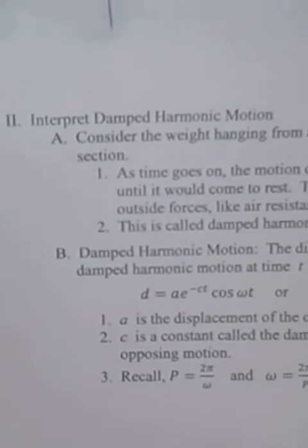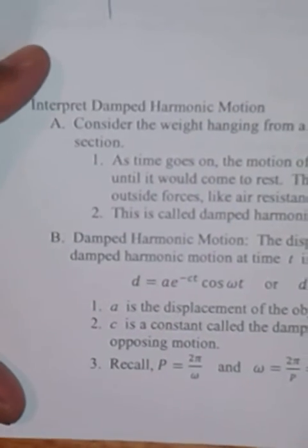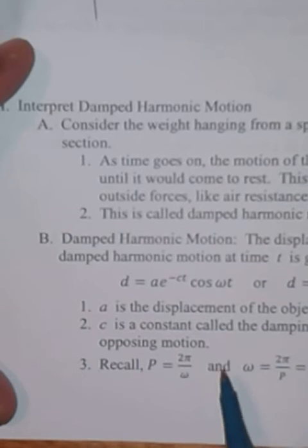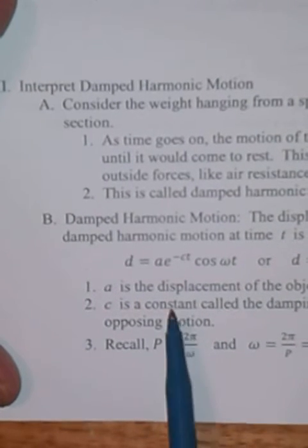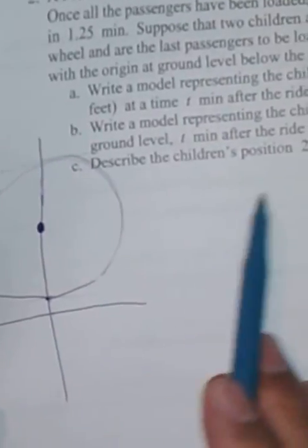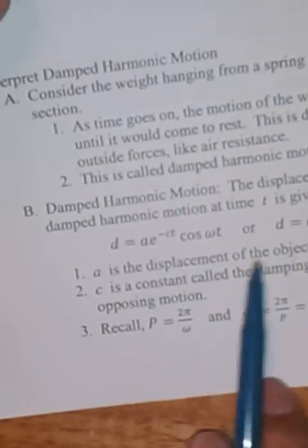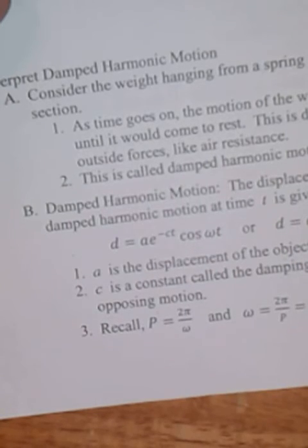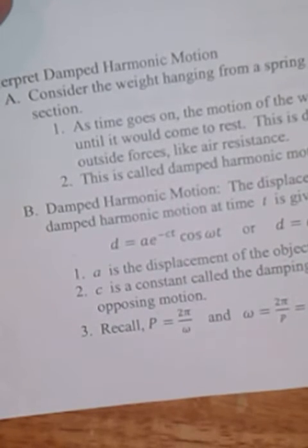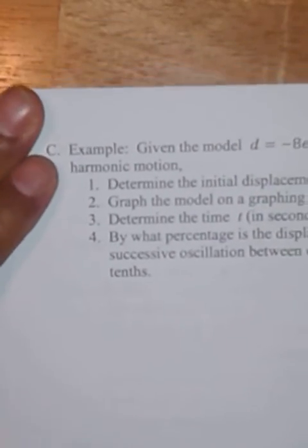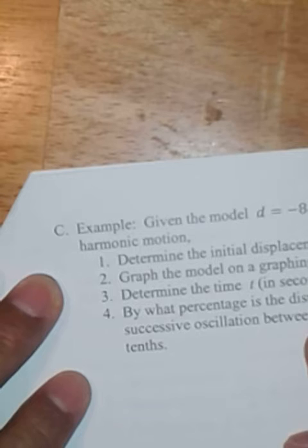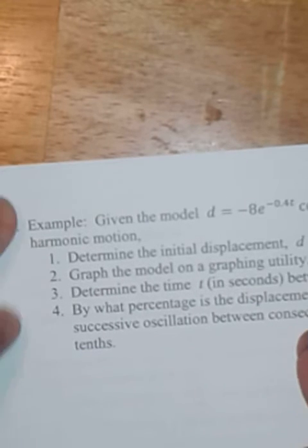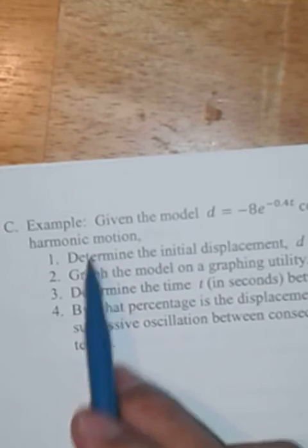The second part is damped harmonic motion. We're not going to go too much into that. We just want to know how to deal with it. We don't need to know how to really write this stuff as much as these up here. So here we're going to write stuff here. We're just going to work with whatever we're given. We're going to be given something and we're just going to work with it. So let's take a look at just a little bit of an example. We're given a model D equals negative 8 e to the minus 0.4 T cosine pi T for an object in damped harmonic motion.